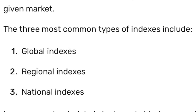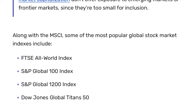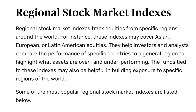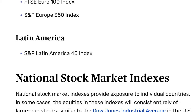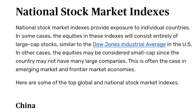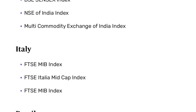The article covers the three most common types of indexes: global, regional, and national. A global stock market index tracks equities throughout the entire world. Regional stock market indexes track equities from specific regions such as Asia, Europe, and Latin America. Lastly, national stock market indexes provide exposure to specific countries. Some countries may be difficult to track due to size, especially if they are in an emerging market — one not yet developed but in the process of growing. Below you can see different indexes for countries such as China, Japan, Germany, and more.